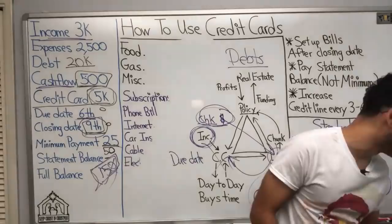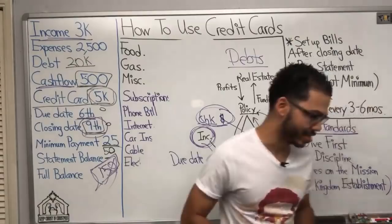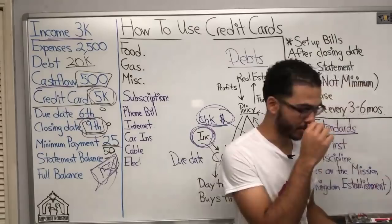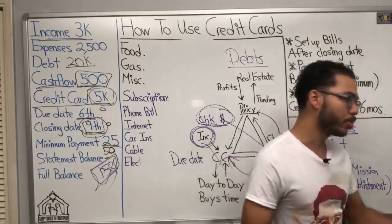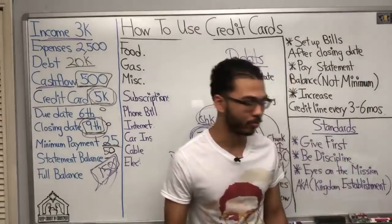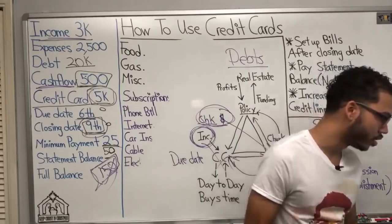Is velocity banking possible before you hit 20% equity on a house? I'd say yes — it depends on the bank, credit union, or company. Typically they want to see 20% equity in the home first, but some credit unions go as low as 10% LTV for a HELOC.